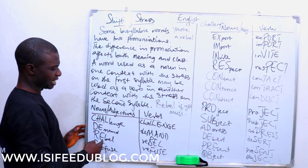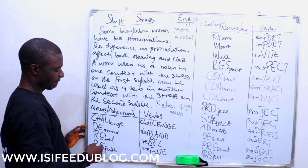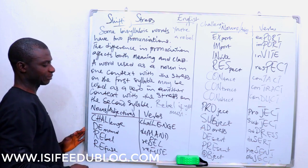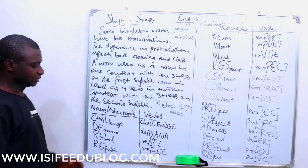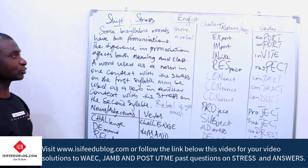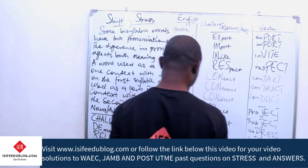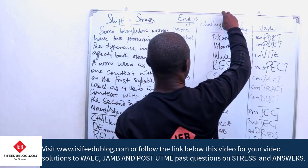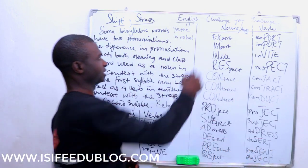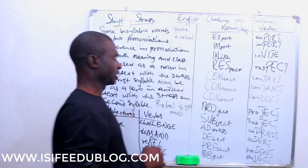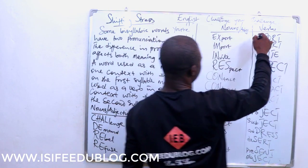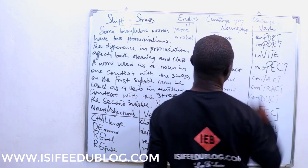Here is 'demand'. The noun form is 'DEMand' and the verb form is 'deMAND'. Let's put 'challenge' in a sentence: 'chaLLENGE your CHAllenge' — this is the verb and this is the noun. 'ChaLLENGE' has the stress on the second syllable; 'CHAllenge' has the stress on the first syllable.